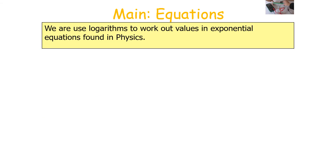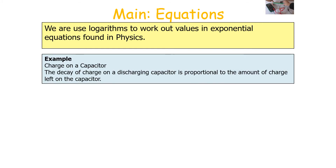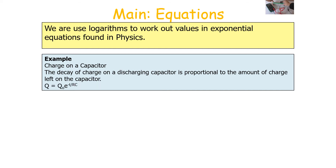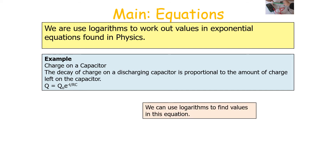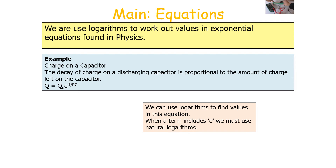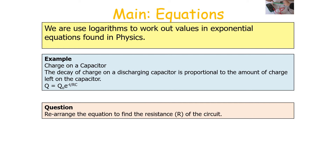We use logarithms in physics to work out values in exponentials. For example, the decay of charge on a discharging capacitor is expressed as Q = Q₀ e^(−T/RC). We can use logarithms to find values in this equation. When a term includes E, we must use natural logarithms, LN. A question might ask you to rearrange the equation to find the resistance R of the circuit.